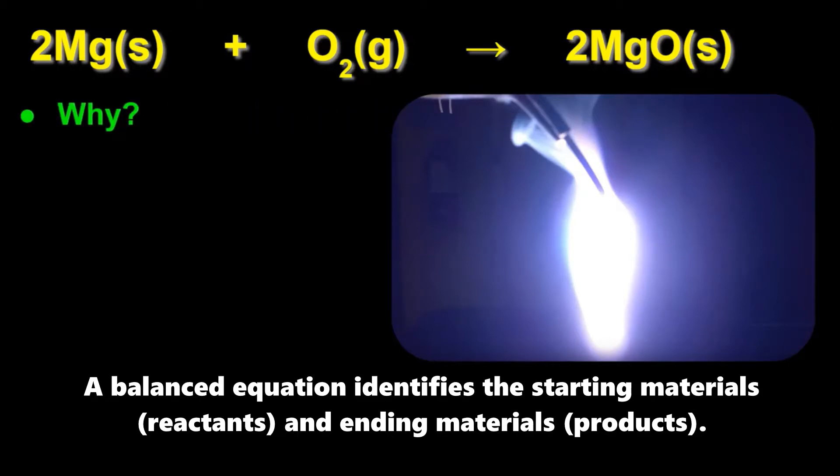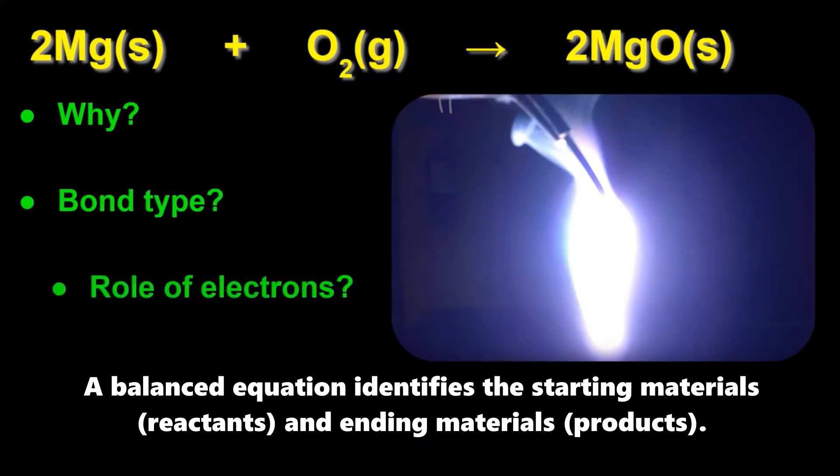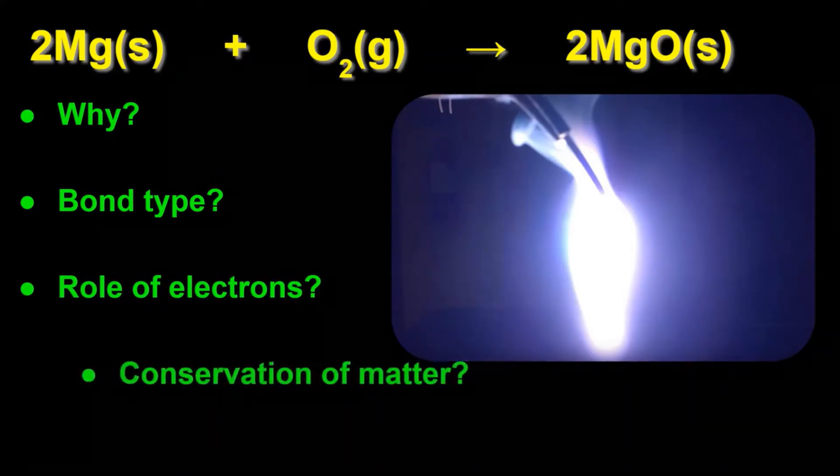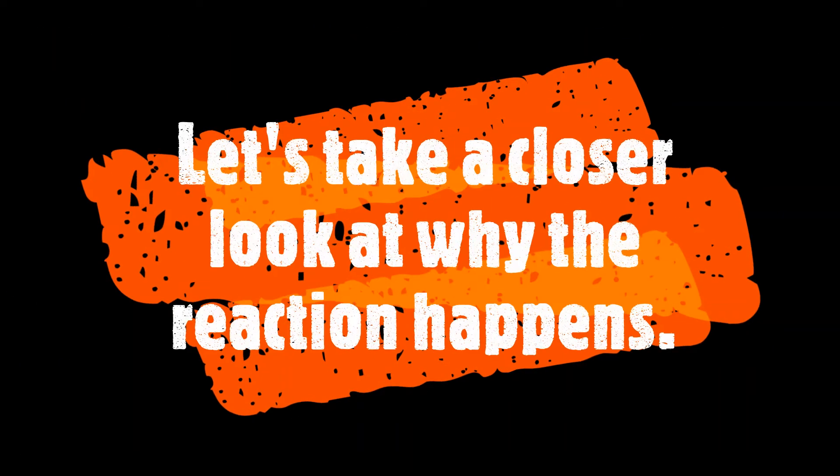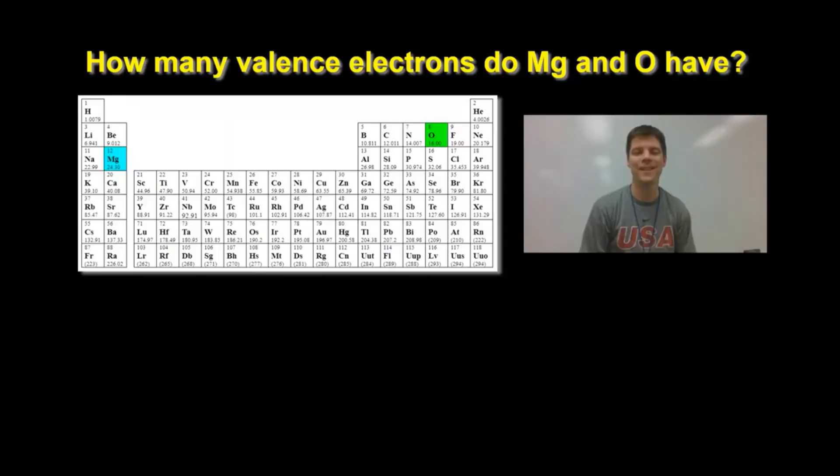This video will discuss why the reaction happens, what kind of bond forms between magnesium and oxygen, what is the role of electrons, and how does conservation of matter play a role in the reaction process. Let's start by taking a closer look at why the reaction happens in the first place.